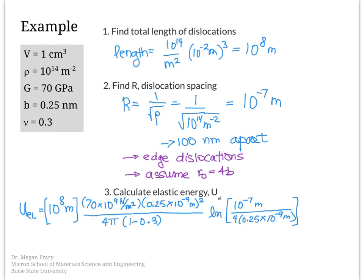Carrying out the calculation, the total elastic energy is equal to 0.23 joules. It's not a very high elastic energy, but it still contributes to this one cubic centimeter of material. In this video, we looked at how to calculate the elastic energy of a dislocation, how it depends on dislocation density, how to find that spacing, and what values for elastic energy might be.